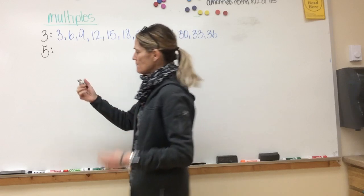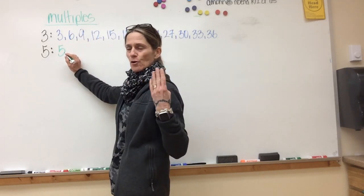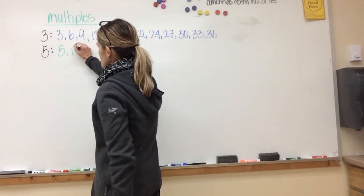So the next one I would do is 5. Remember, I start at 5 and then each time I add five more. That's skip counting. So 5, 10.